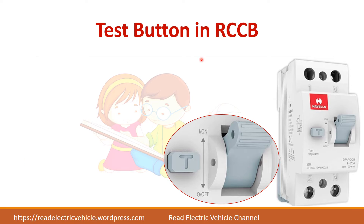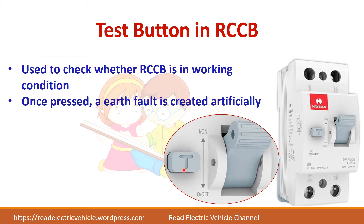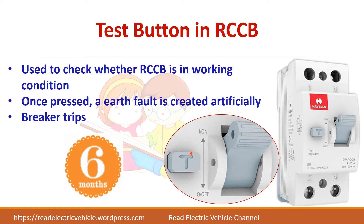Next, we will see about the test button available in the RCCB. You can see a symbol 'T' on the test button. This is used to test whether this particular RCCB is in working condition or not. Once you press this button, an earth fault will be artificially created inside and the breaker will trip. If it doesn't trip, it means that the RCCB has to be replaced or it is not working properly. It is advised by the manufacturer to test the RCCB at least once in six months, and some manufacturers even recommend testing every month.